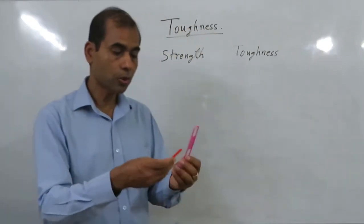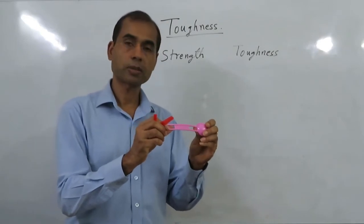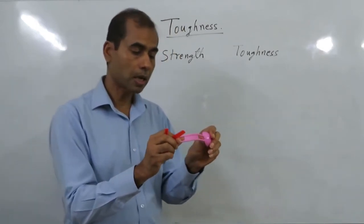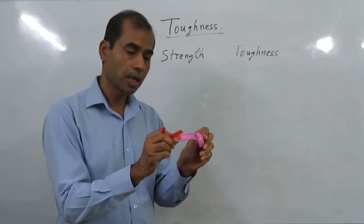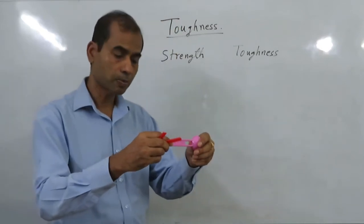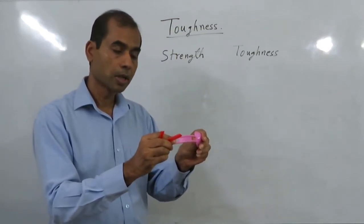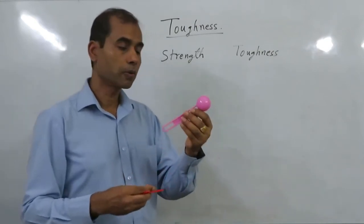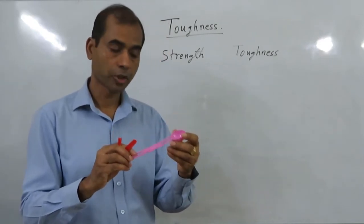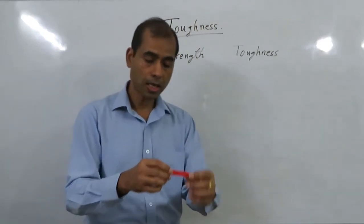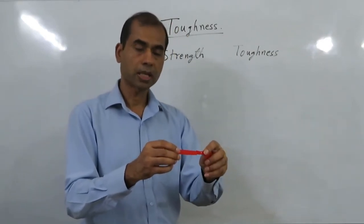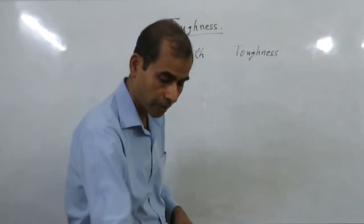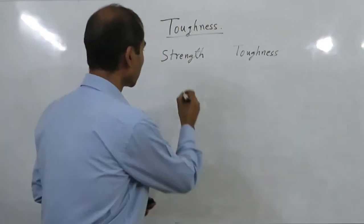Toughness basically means how much energy the material can absorb before it fractures. In these two examples, one material could absorb a large amount of energy during bending. The same happens in a tensile test. This energy is essentially force multiplied by displacement — the force applied times the deformation. This much energy it can absorb without fracture, whereas the brittle material bends slightly and then fractures, unable to absorb much energy before failure.